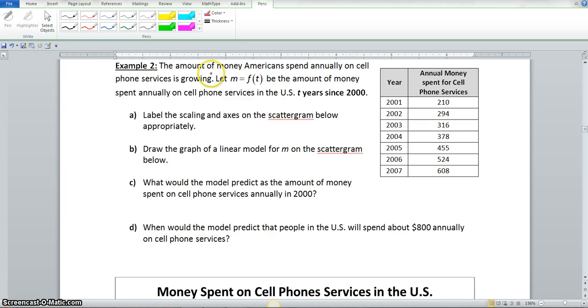Example 2: The amount of money Americans spend annually on cell phone services is growing. Let M equals f of t be the amount of money spent annually on cell phone services in the U.S., t years since 2000. Your year is represented by t. It's years since 2000, so we wouldn't use 2001, we'll put 1 because it's one year since 2000.